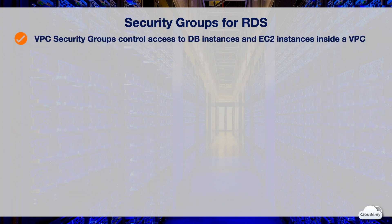You can use security groups to control traffic in and out of a DB instance. There are three types of security groups used with RDS. VPC security groups control access to DB instances and EC2 instances inside a VPC. If the DB instance was created in a VPC, it must have a VPC security group that authorizes the connections. Both DB security group and EC2 classic security group are considered legacy.